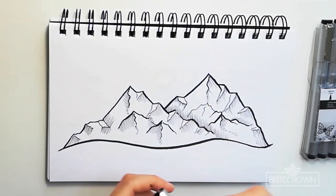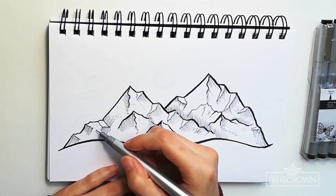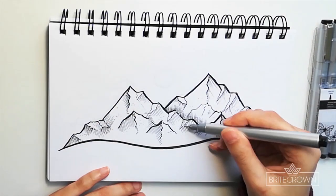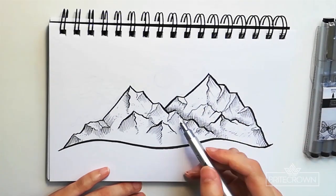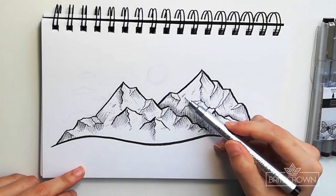And then using the thinnest size I created some clusters of dots and specks just to add some texture and more definition to the mountains. And then I went over again creating some more shadows using the lines and some cross hatching.